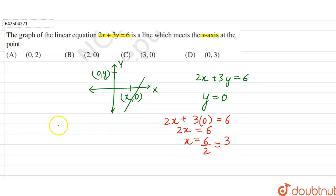So the coordinate or the solution for the given equation is 3, 0. So from the option, we can say that the correct option is option C.